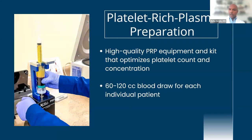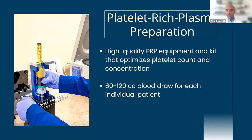Not all PRP is created equal. It's important that you invest in a high-quality PRP kit, equipment, and centrifuge. We've learned from numerous studies that a minimum of 60cc should yield as close to 10 billion platelets as possible. When considering introducing regenerative medicine into your practice, especially PRP, reach out to colleagues, mentors, and experts in the field and get advice. You want to start off with a high-quality system — that's where you'll see the best results.